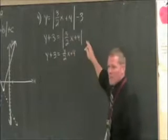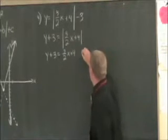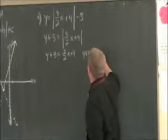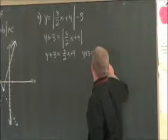And the second one, just take the opposite of the second side. So it's y plus 3 equals negative 3 halves x minus 4.